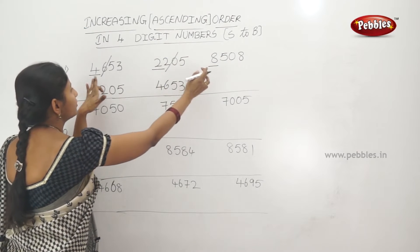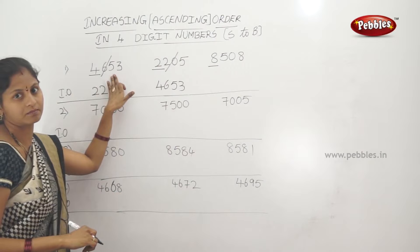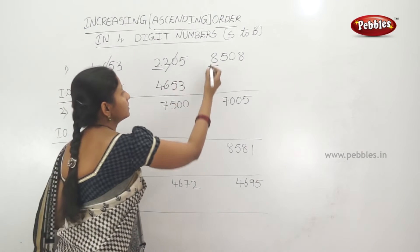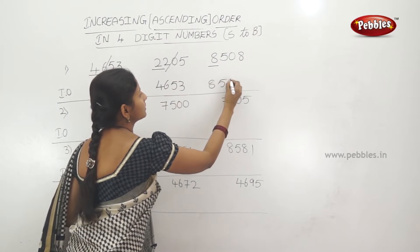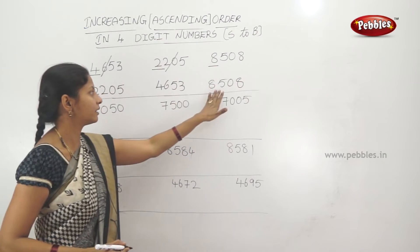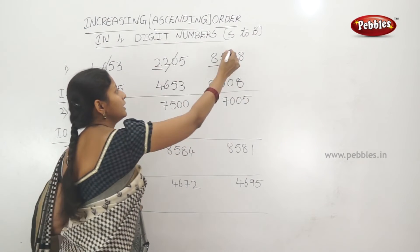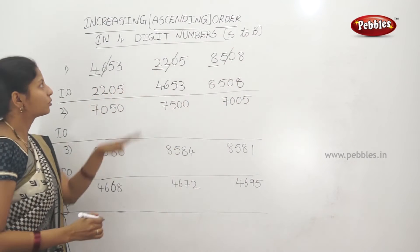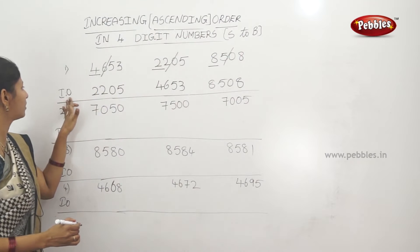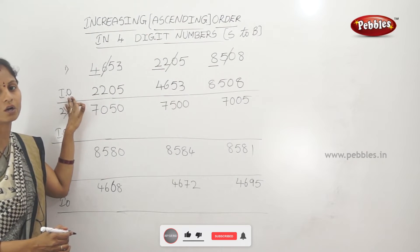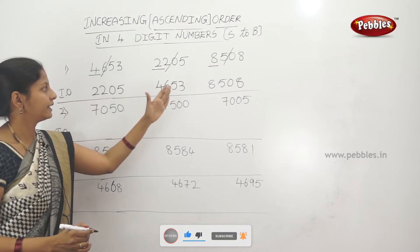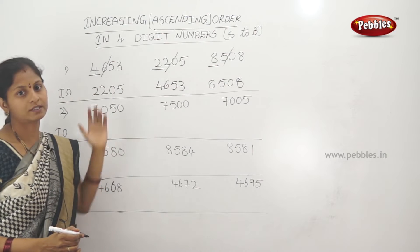The remaining number, 8,508, is the biggest number. So in increasing order — ascending order — the arrangement is: 2,205 — 4,653 — 8,508. This is ascending order for 4-digit numbers.